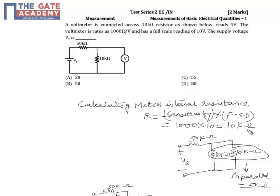The question states: A voltmeter is connected across a 10 kilo-ohm resistor as shown below and reads 5 volts. The voltmeter specifications are 1 kilo-ohm per volt sensitivity and can read up to 10 volts.